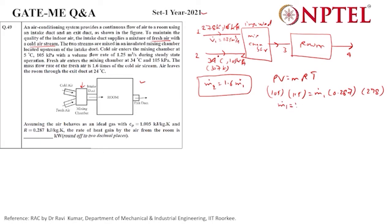From here we can easily find m1 dot. When calculating, it comes to 1.645 kilograms per second. Now easily we can find m2 dot. m2 dot would be 1.6 times m1, so it would be 2.632 kilograms per second. These two will be mixing, so m3 dot would be their sum.